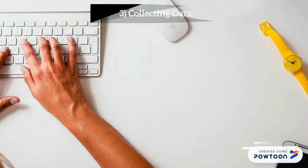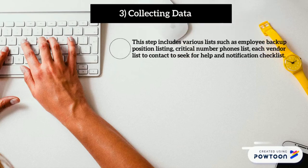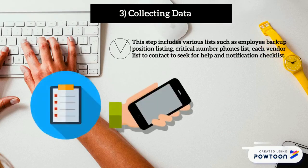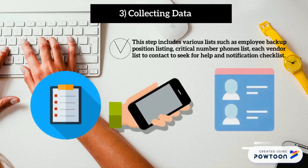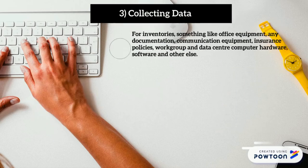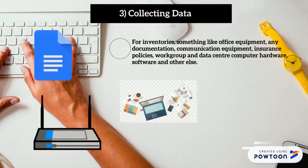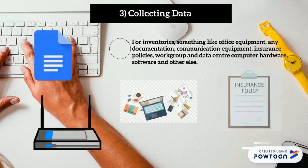The third step is collecting all data, including various lists such as employee backup position listing, critical phone numbers list, and vendor notification checklists. For inventories, this includes office equipment, documentation, communication equipment, insurance policies, work groups, data center computer hardware, software, and other items.